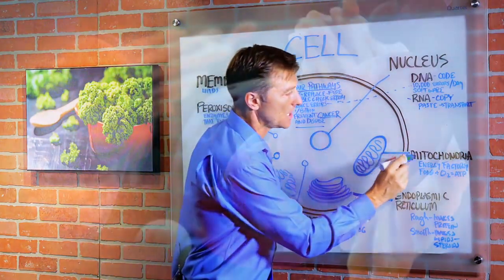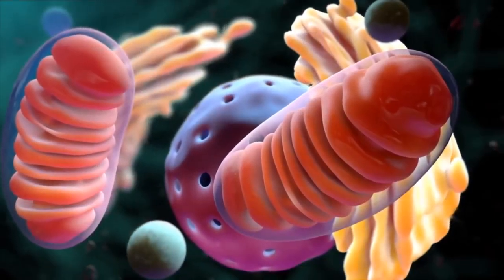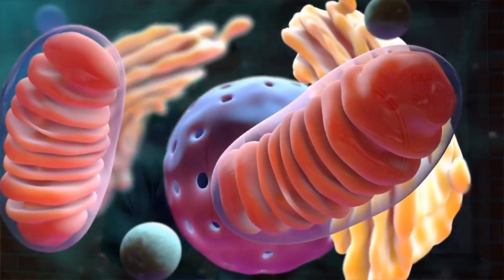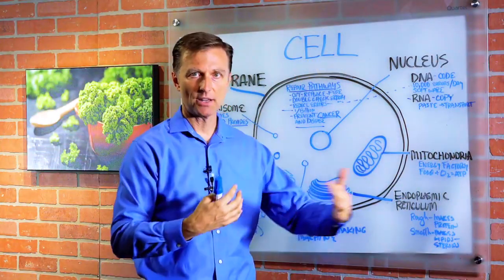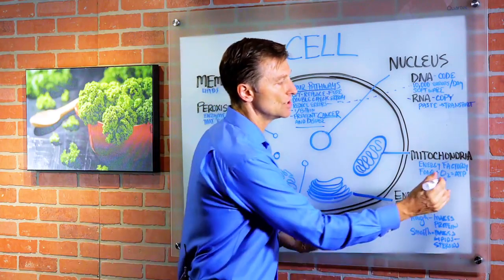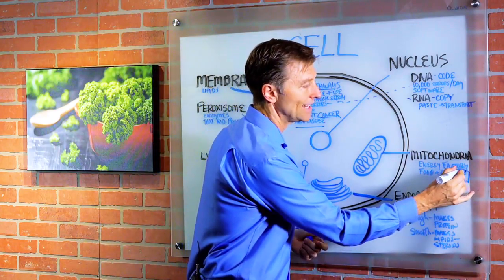Next thing we're talking about is the mitochondria. The mitochondria is the energy factory of the cell. It takes your food, mixes oxygen, and it produces energy. And in the body, the energy is called ATP. It's kind of like an energy currency.